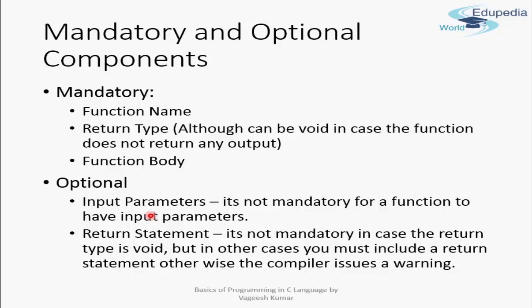Among the mandatory and optional components: mandatory components are the function name, the return type (even if the function returns nothing, you use the void return type), and the function body. Optional components include input parameters — a function may or may not accept input. For example, a function that just generates a random number doesn't need any input.